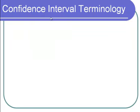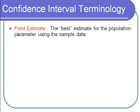Let's start out with some terminology. When I say the word point estimate, that means the best estimate or best guess for the population parameter using the sample data. For example, we don't usually know the population mean, so we can use the sample mean as our point estimate. The same can be said for the population proportion and the sample standard deviation.